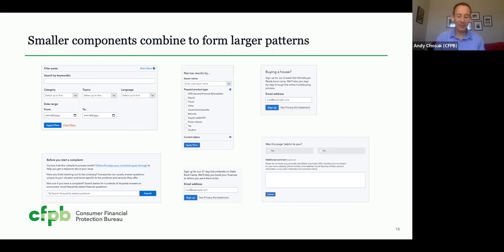These building blocks can be combined to form more complicated patterns. Fonts, colors, buttons, text inputs, and other controls can be combined to create a wide variety of different web forms. Here we see several exemplary forms from the CFPB website — filtering a list of blog posts, signing up for a mailing list, or submitting feedback. Regardless of specific content or use case, each form is built from the same basic components, making it easy to pick them up and put them together in more complicated ways.